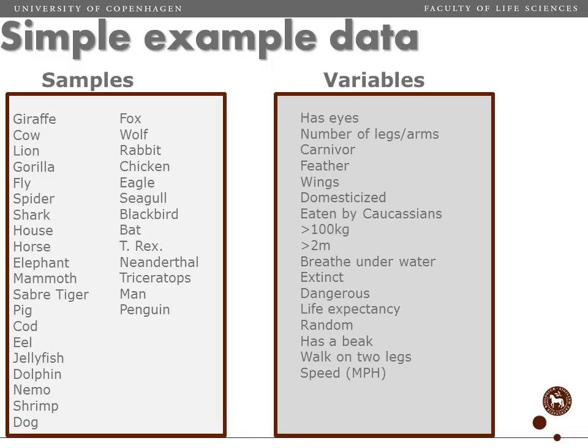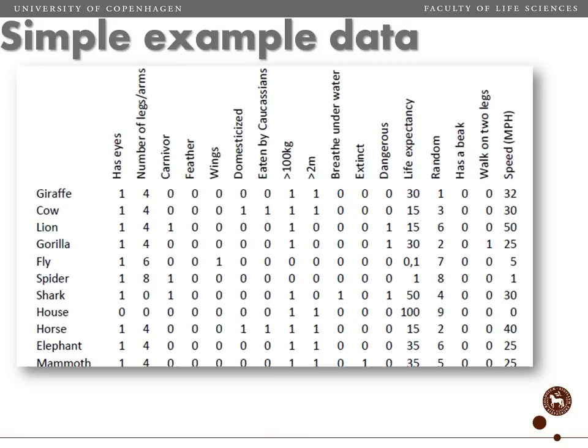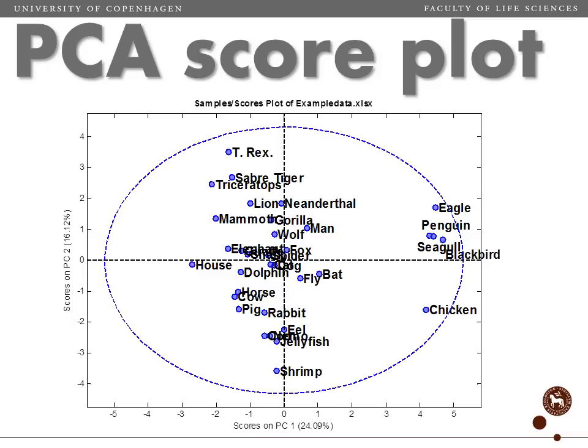These assessments were all made by me so they are by no means of high quality, but with this we can actually generate a data set representing these animals with respect to different features. We have both dummy variables — very simple variables such as number of legs — and more quantitative measures like life expectancy or maximum speed. All in all it's a very simple data set.